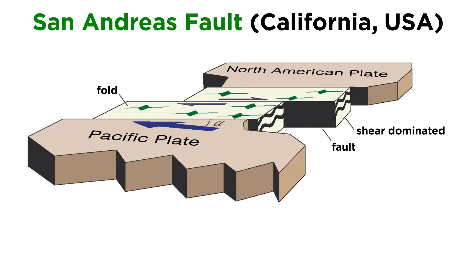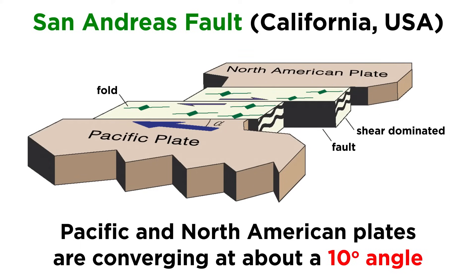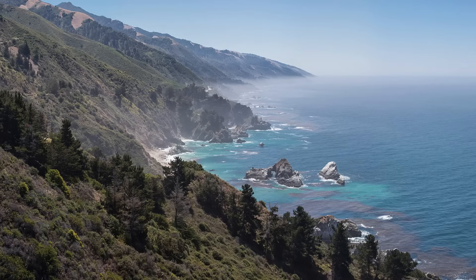An example of this is the San Andreas fault. Here, the Pacific and North American plates are converging at about a 10 degree angle. Though predominantly a strike-slip fault, it is also slightly compressional, as is evidenced by the coastal mountain ranges of California.